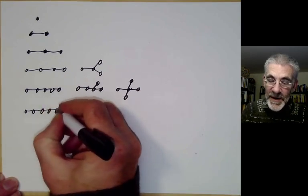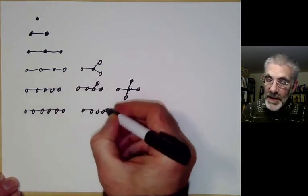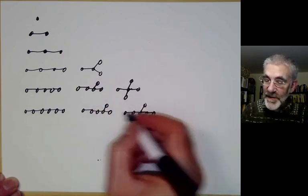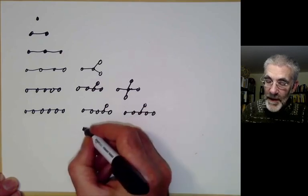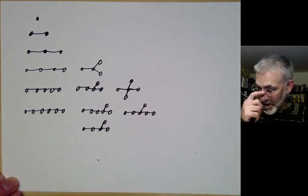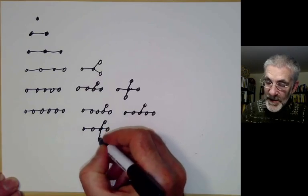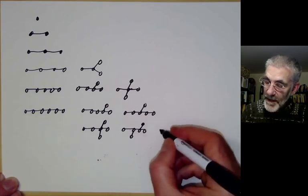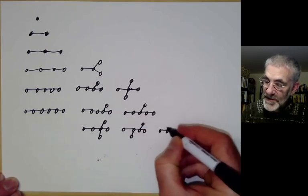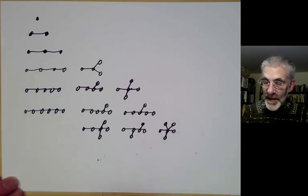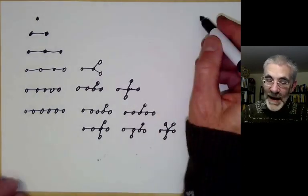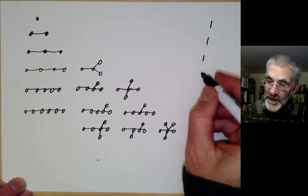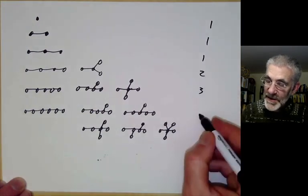For six vertices, it's starting to get complicated. We can have a line of six or a line of five. With the line of five, the sixth vertex can join to either the middle or not quite the middle. If we have a line of four, we tack on two more vertices either like that or like that. And if we have a line of at most three, we can join them all to a central point.